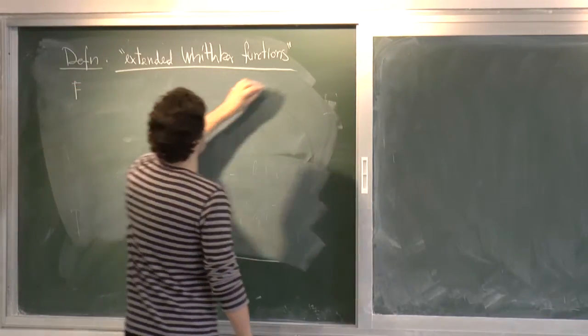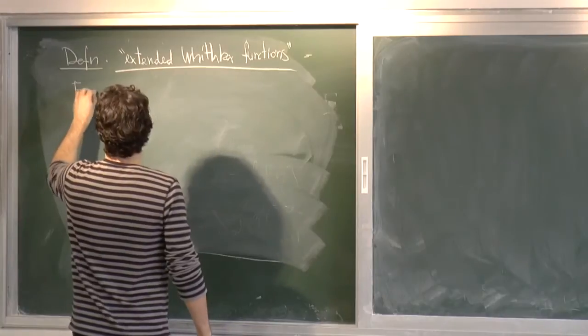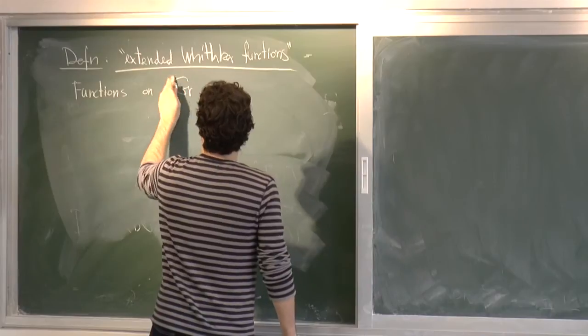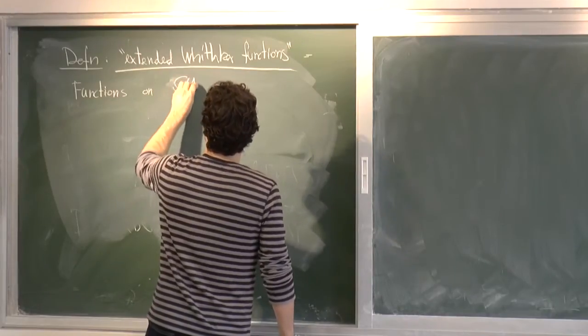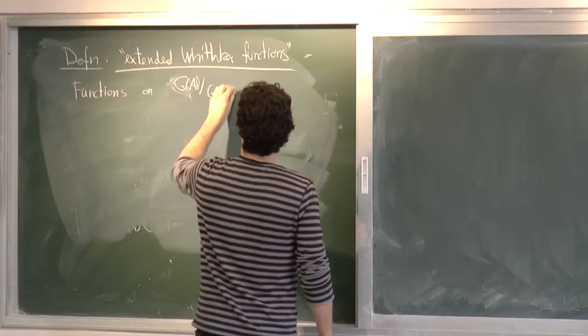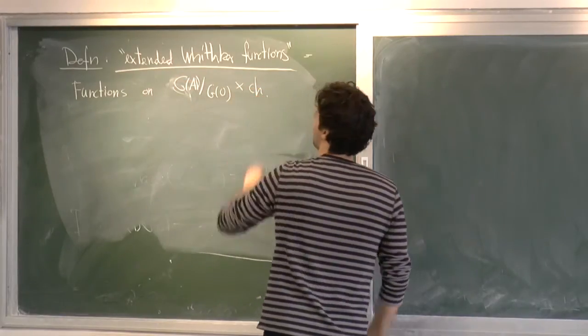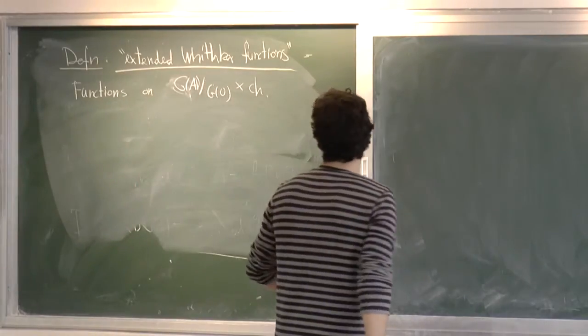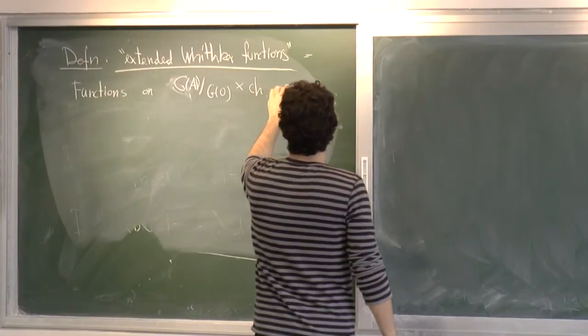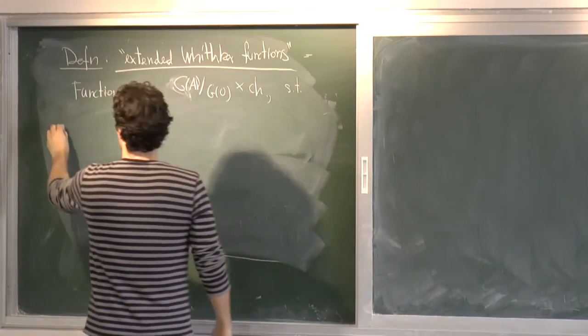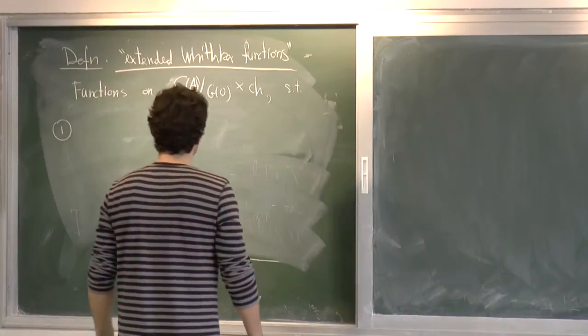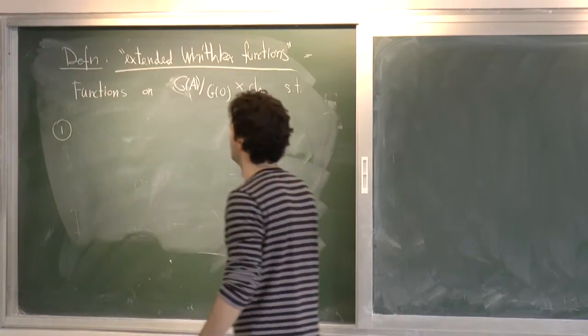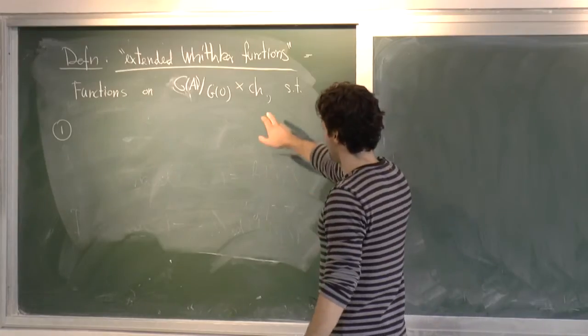is the space of functions. So functions is equal to functions on the adelic Grassmannian, times the character. I put the space of characters in the domain of the functions. So it's functions in two conditions, such that. Condition one is? Wait.